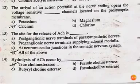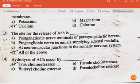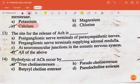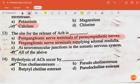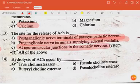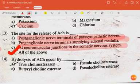The arrival of an action potential at the nerve endings opens the voltage-sensitive calcium channels located at the presynaptic membrane. The site for the release of acetylcholine includes postganglionic nerve terminals of parasympathetic nerve, preganglionic nerve terminals supplying the adrenal medulla, and at neuromuscular junctions in the somatic nervous system — all of the above. Hydrolysis of acetylcholine occurs by true cholinesterase, while many esters are hydrolyzed by pseudocholinesterase.